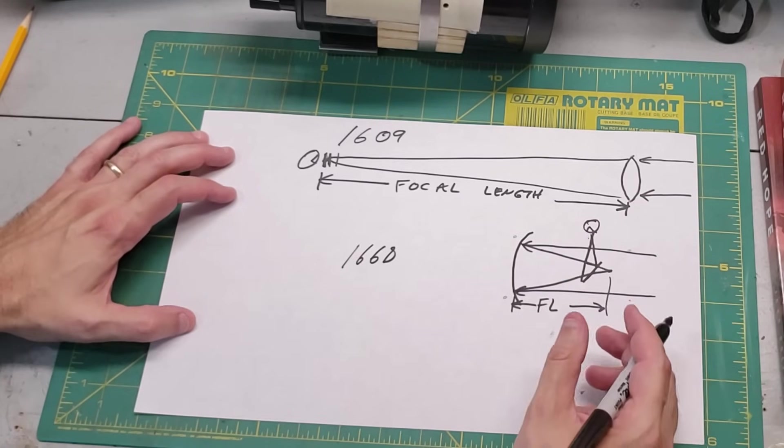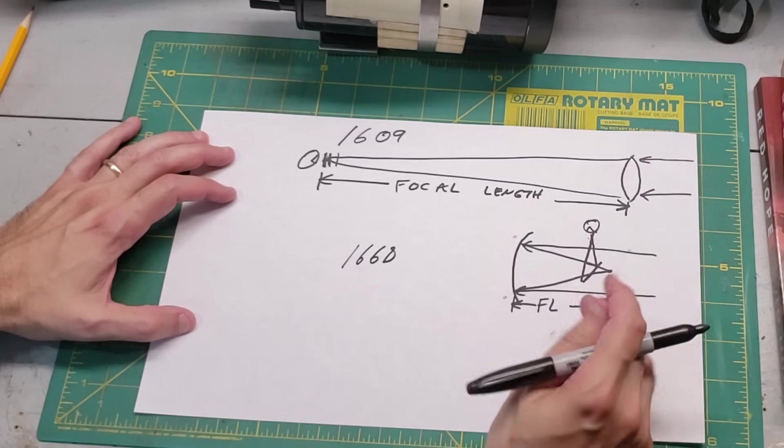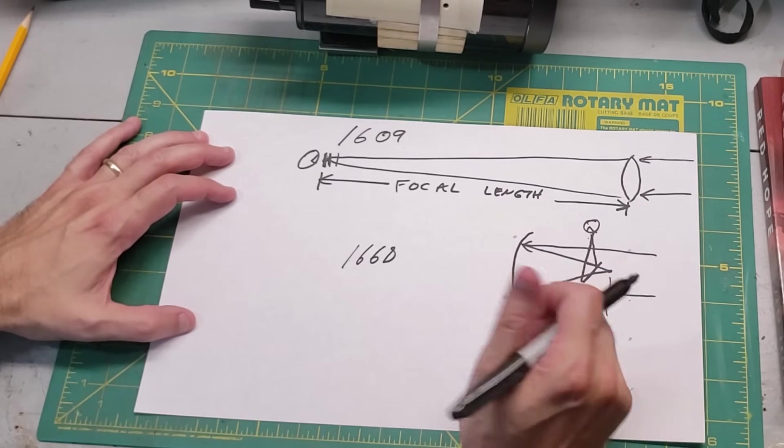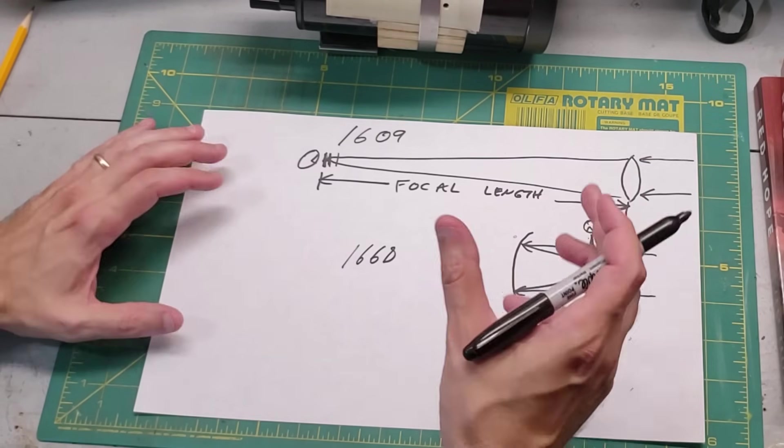Now you may have noticed that these are the same diameter, but the reflector style is much shorter, and that's one of the advantages of the reflector style.